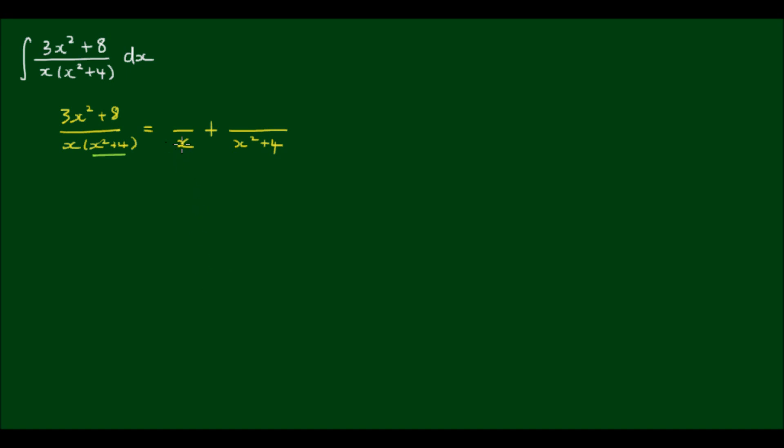Now the first partial fraction is simply going to be a constant, so it will be A divided by x. Now for the second partial fraction, because we have a quadratic denominator,